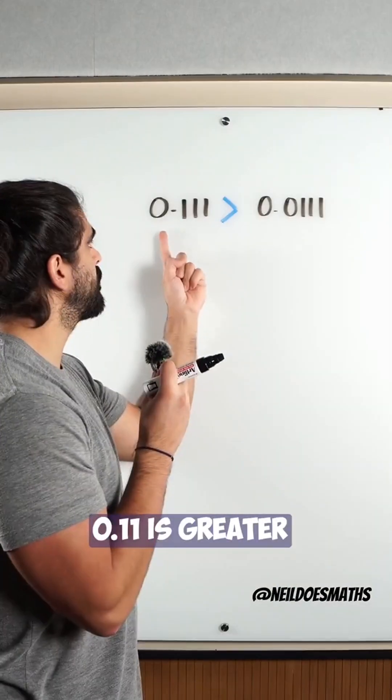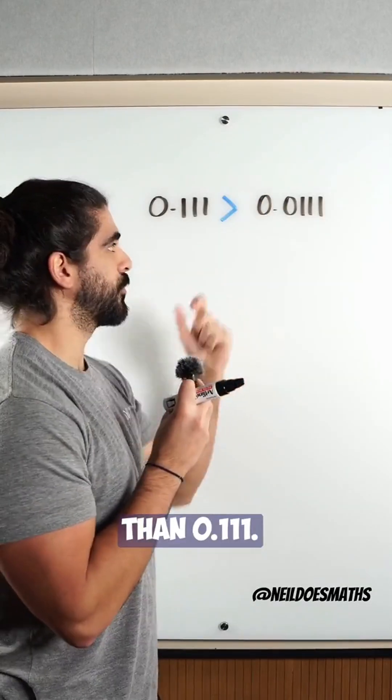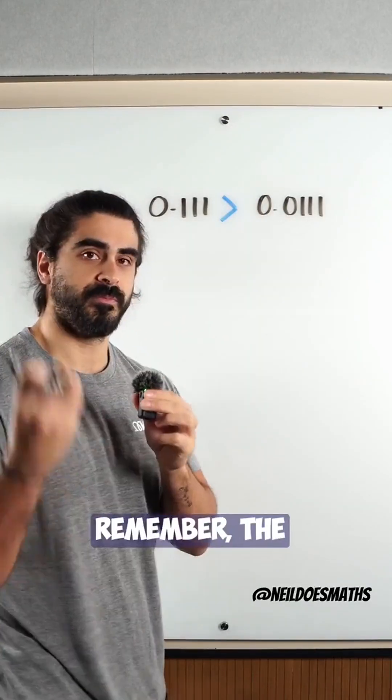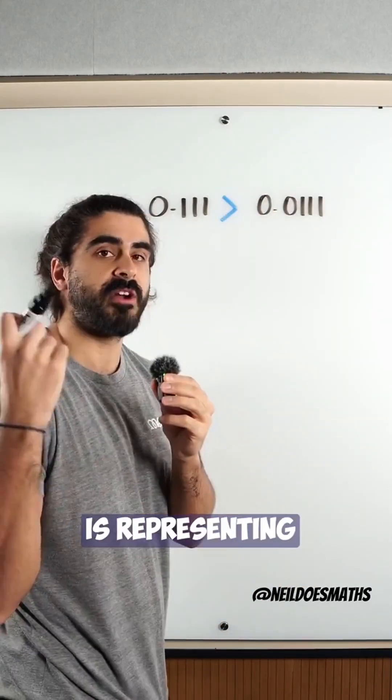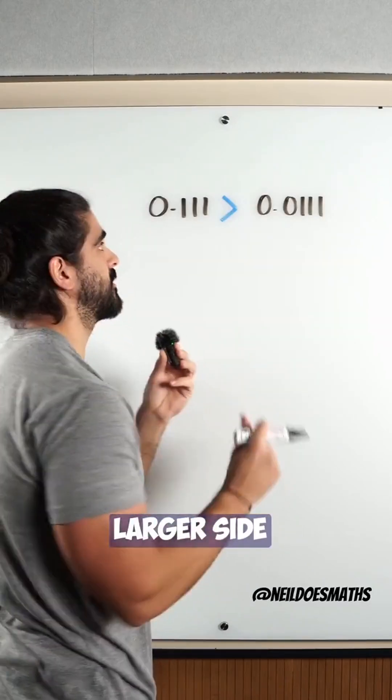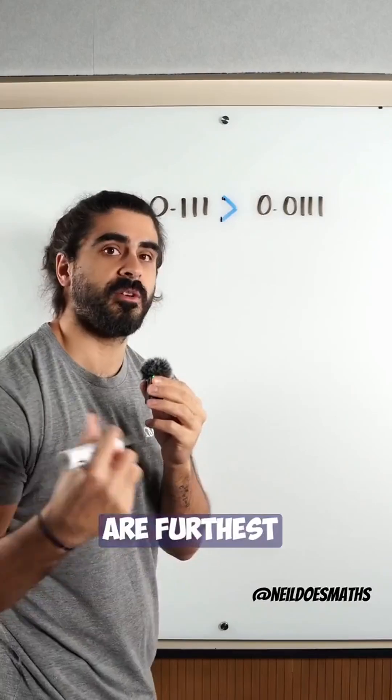We have that 0.111 is greater than 0.0111. Remember, the way to remember is the side with the open face is representing the larger side because these two points are furthest away.